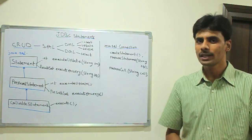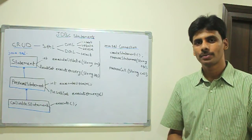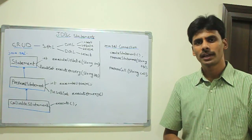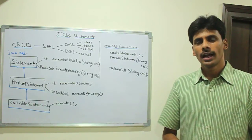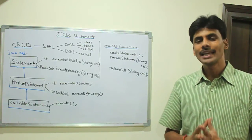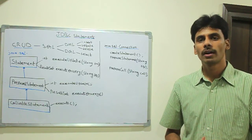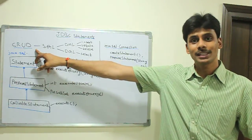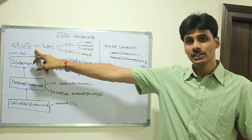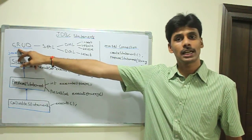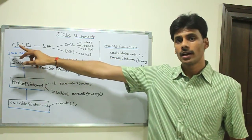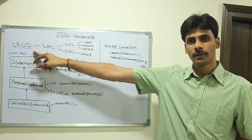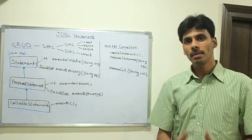Let's say you are developing a social networking website, an e-commerce website, or even a standalone application. At a minimum, any application you develop does four things, famously known as CRUD operations. C stands for create, R for read, update, and delete.